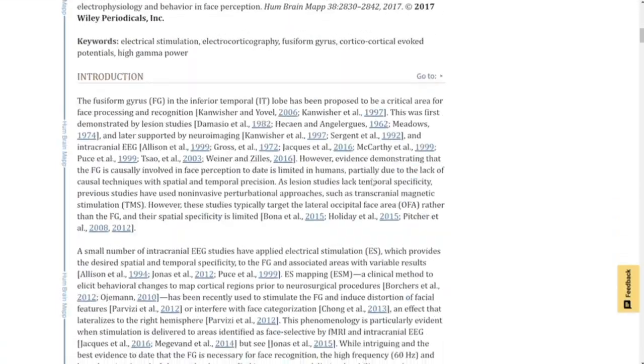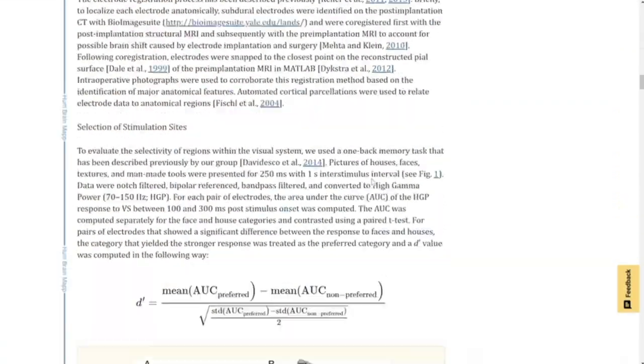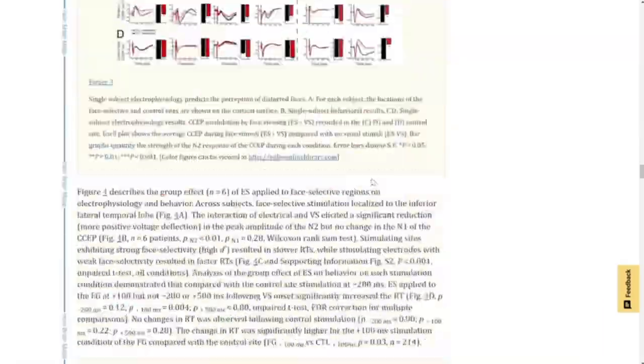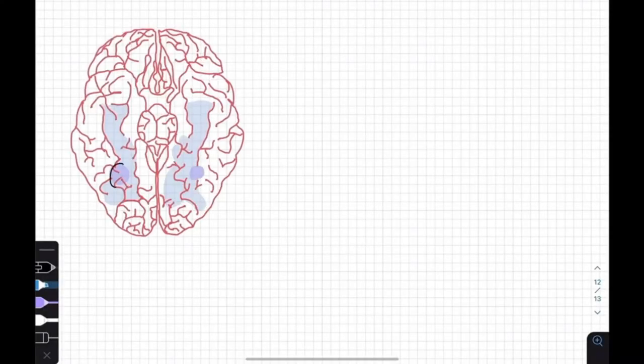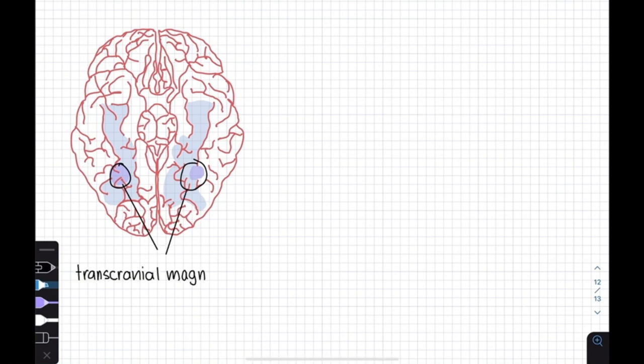There is substantial evidence to support the proposed role of the FFA in facial recognition. For example, a study at Stanford University used transcranial magnetic stimulation to specifically target and temporarily disrupt the fusiform face area, resulting in a loss of facial recognition ability.